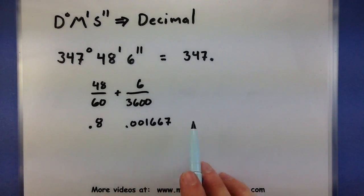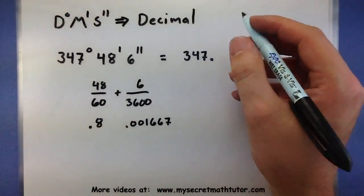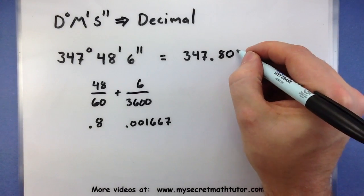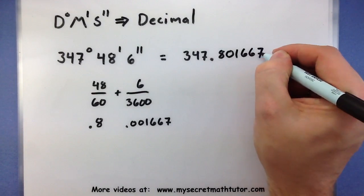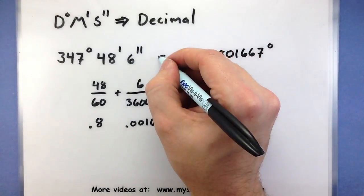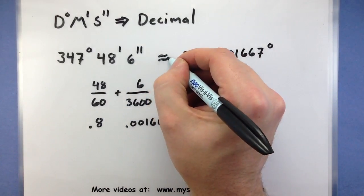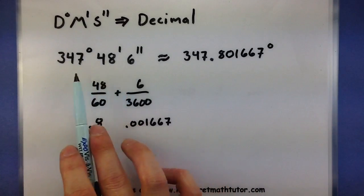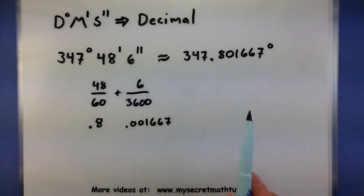Adding these together, I can put it with my other number, so 0.801667. Since I chopped it off, this is now an approximation. So just like that, I can get a better sense of maybe how big this angle is.